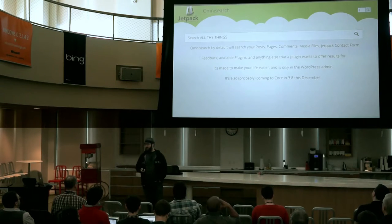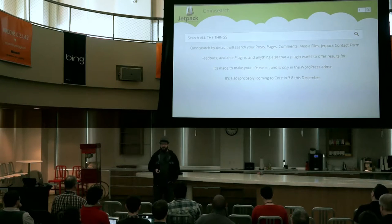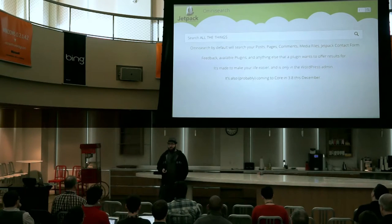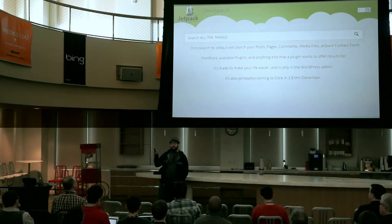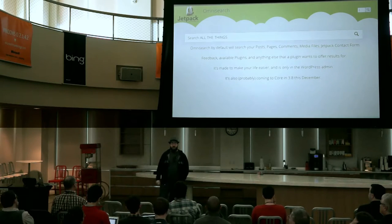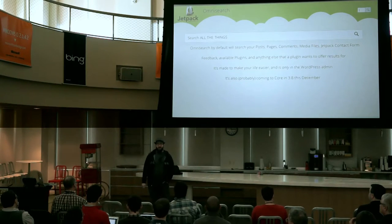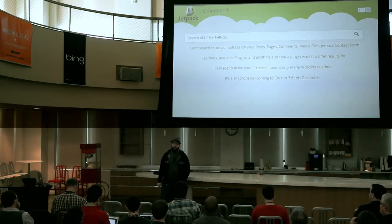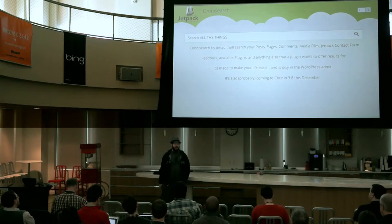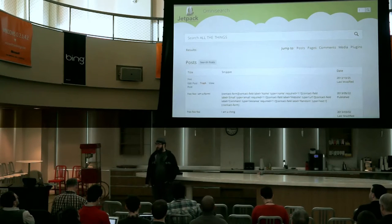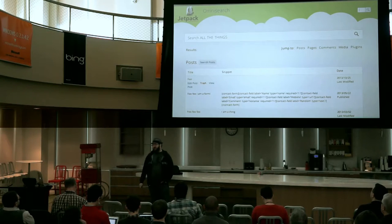It is probably coming to core in 3.8. There's been a discussion — it's probably going to be dropping the Omni-search moniker; it'll just be called search. So if you happen to see a new search box show up in your admin bar on the top right side, give it a shot. There's currently a discussion going on at make.wordpress.org slash core about different things we'd like to change and tweak to get it ready to go in. So if you search, this is what you see, and then you can jump around to the different results sections.